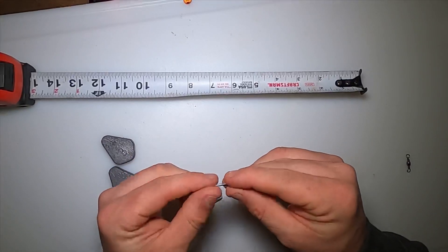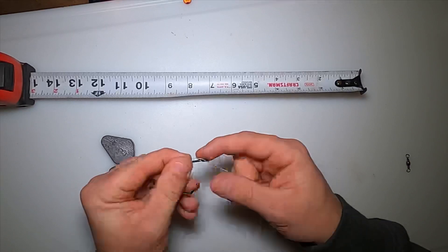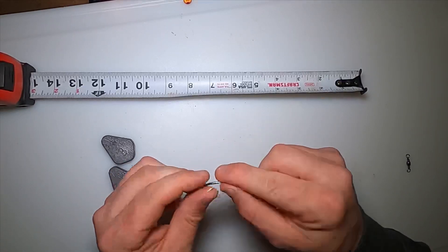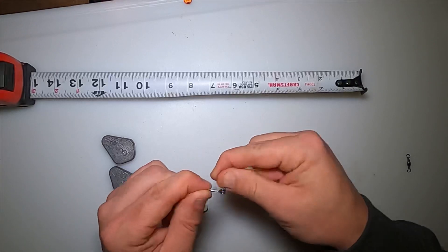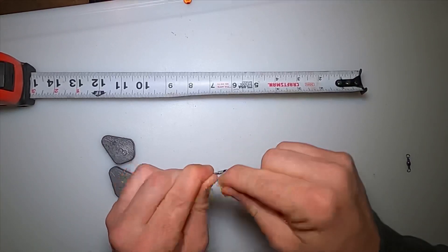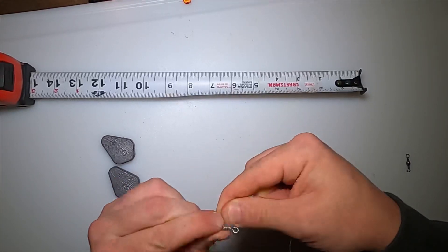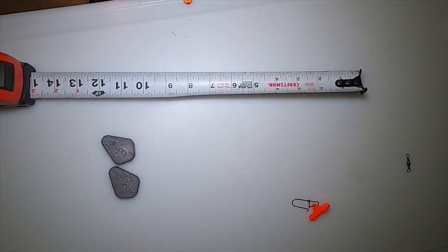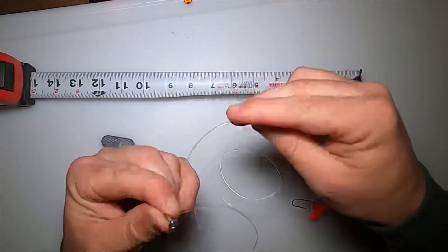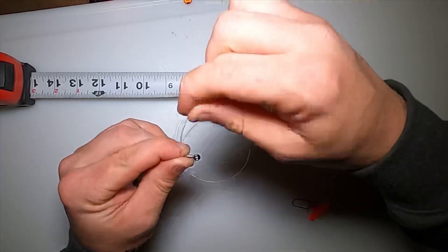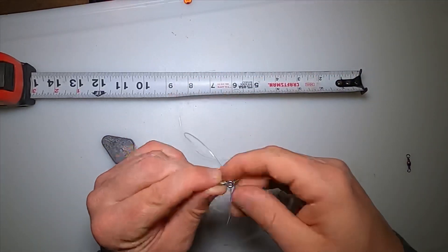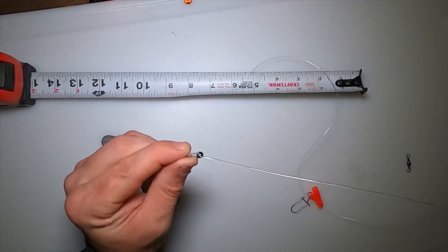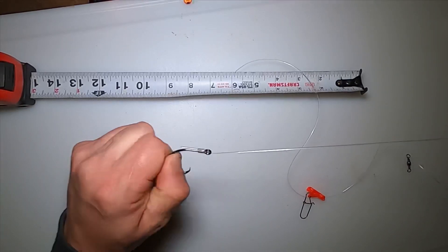Take it and run it through that way, through the side that the point's on. Wrap it around seven times. You can wrap it more if you want, that's just what I tend to do. Then take it into your line, stick it through the top of the hook right there on the opposite side that you just came through.